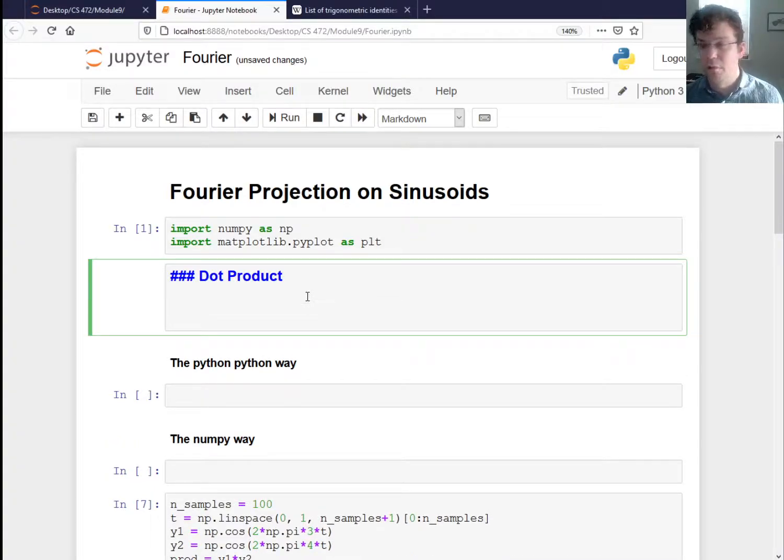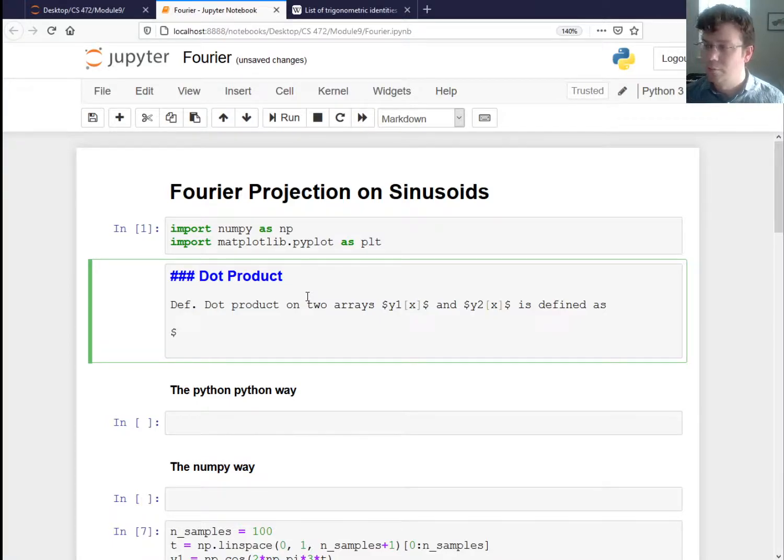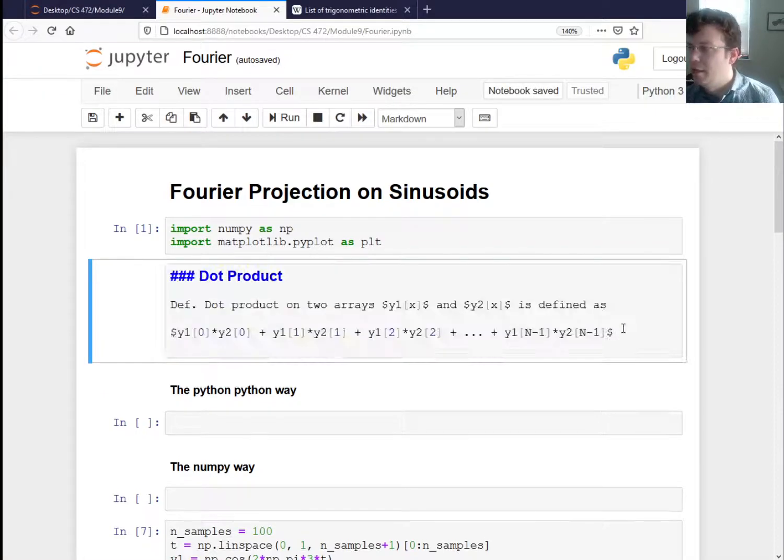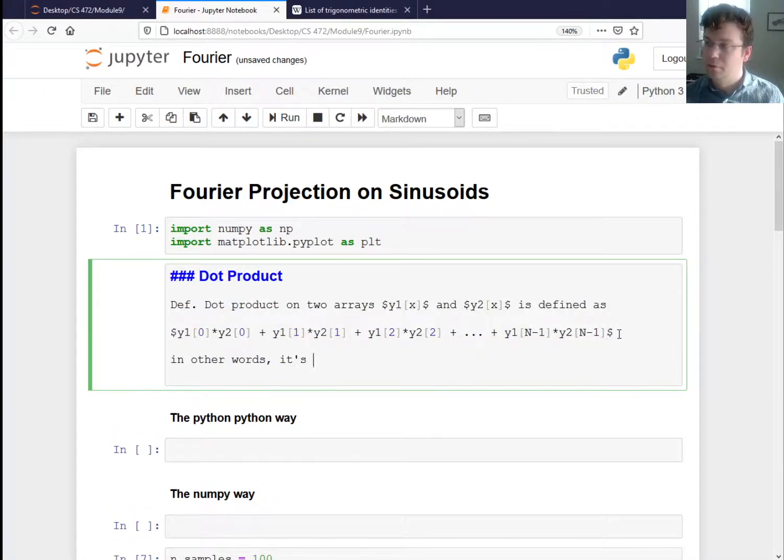So a dot product is something we can define on two arrays. The dot product on two arrays, y1 of x and y2 of x, is defined as the sum of element-wise products. So we say y1[0] times y2[0], plus y1[1] times y2[1], plus y1[2] times y2[2], all the way up to y1[n minus 1] times y2[n minus 1]. In other words, it's the sum of element-wise products in between two parallel arrays.